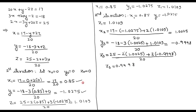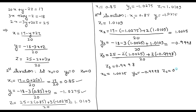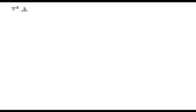The second iteration values are x₂ = 1.0025, y₂ = −0.9998, z₂ = 0.9998. Continuing the same procedure, the third iteration values are x₃ = 0.999999, y₃ = −1.000, z₃ = 1.000. We can see the values are converging toward 1, −1, and 1.